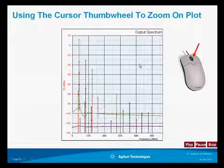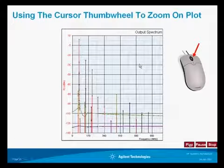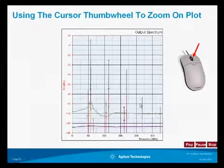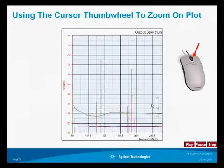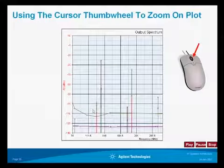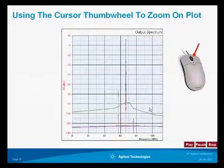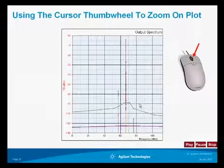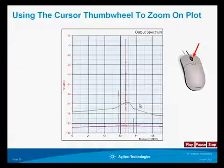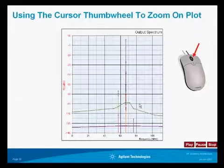Another neat feature of the program is the ability to use the thumb wheel to zoom in frequency-wise. Using the thumb wheel on the mouse, we can zoom in to any specific place on the screen — allowing us to see, for instance, the 60 and 70 megahertz components clearly separated. There's also another one at approximately 80 megahertz, but it's below the noise floor, which is shown as the green line.